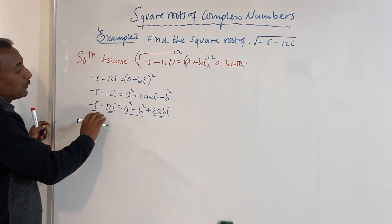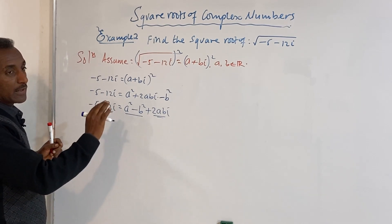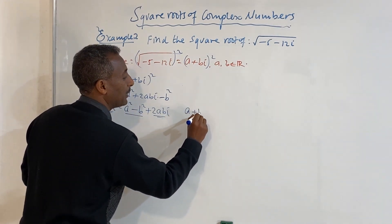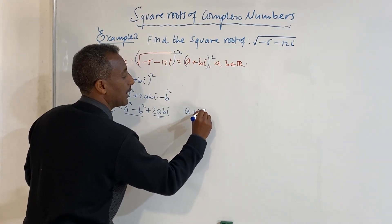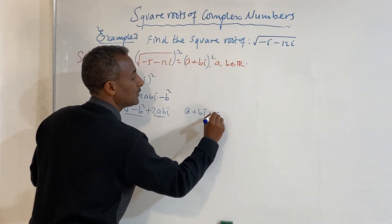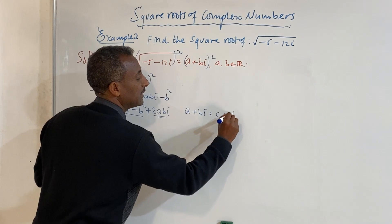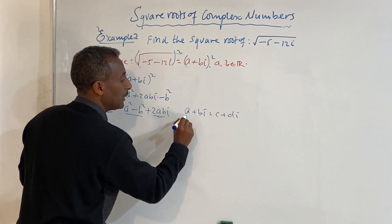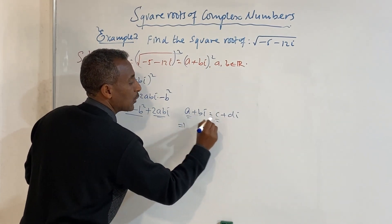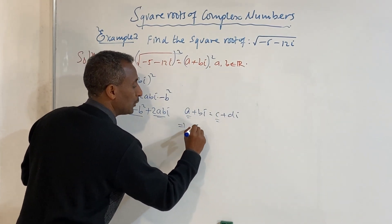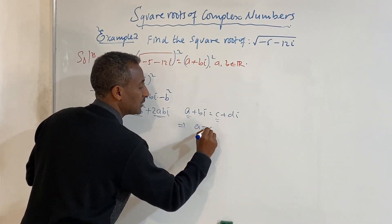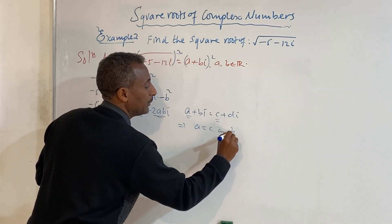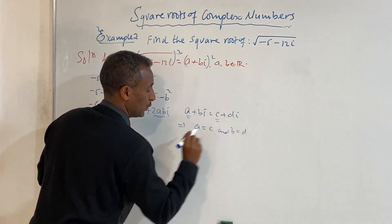By the equality of complex numbers: if two complex numbers are equal, such as a plus bi equals c plus di, then a equals c and b equals d. That is, real parts are equal and imaginary parts are equal.